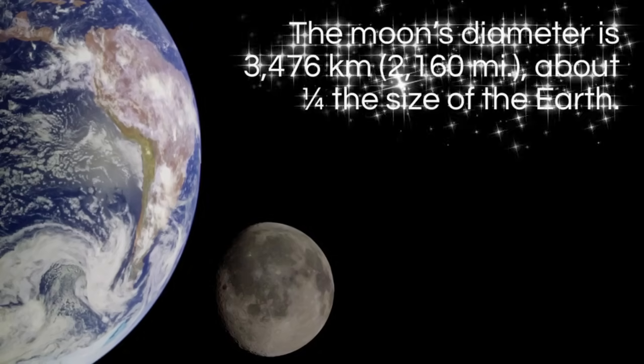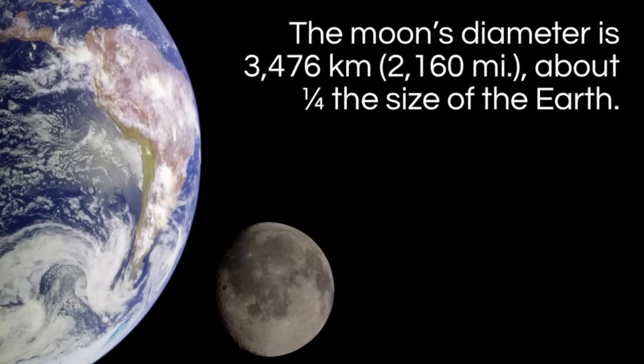How big is it? The moon's diameter is about 3,500 kilometers, a little over 2,000 miles, making it about one-quarter the size of planet Earth. The moon is actually the largest moon compared to the planet that it orbits around, of any of the moons in our solar system.